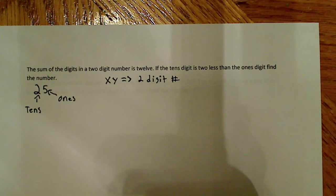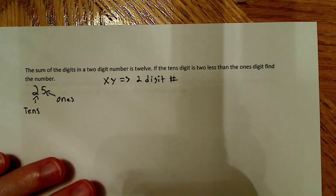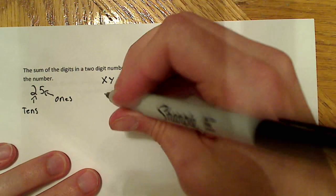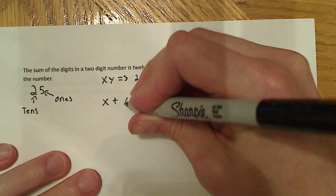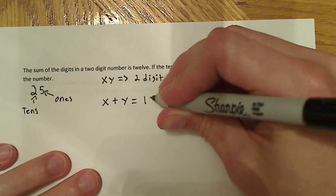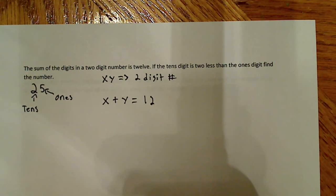And it says that the sum of the digits is 12. So what does that tell us? Well, that actually gives us an equation that says that x plus y is equal to 12. So that tells me that x plus y is equal to 12.